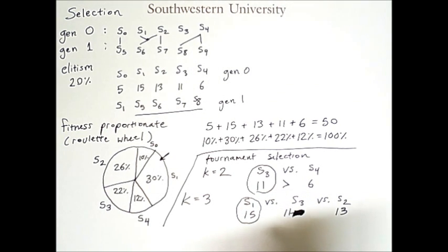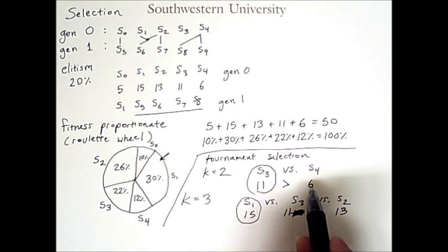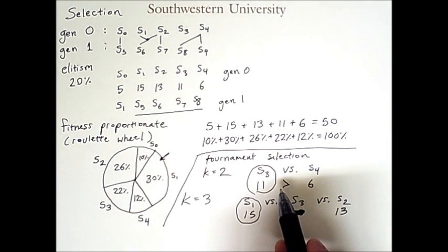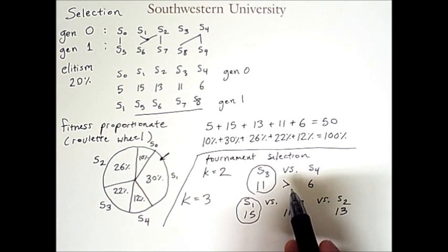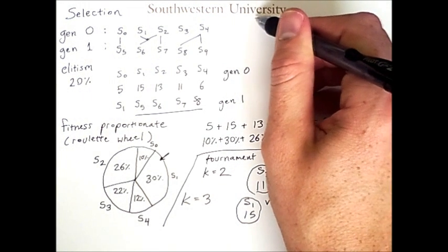It should be noted that it is not strictly necessary to use fitness values for selection. For example, if we were evolving checkers players, you could choose the best player by having two solutions play each other — the winner would be selected and the loser would not. This is an example of co-evolution, which we will talk about at a later date.